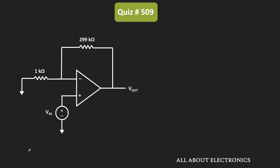The given op-amp is configured in the non-inverting configuration. Here, let's say this resistor is equal to R1 while this feedback resistor is equal to R2. For this non-inverting configuration, the closed-loop gain can be given as 1 plus R2 divided by R1, which in this case is equal to 300. We can use this expression whenever the loop gain Aβ is much larger than 1.